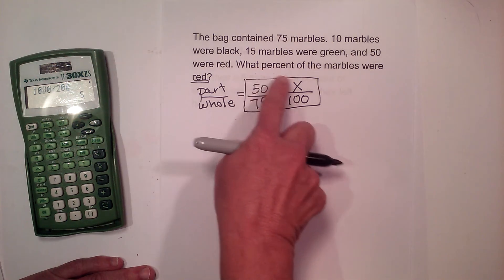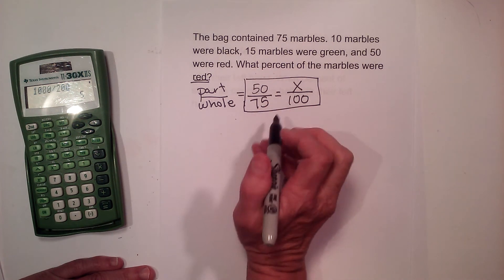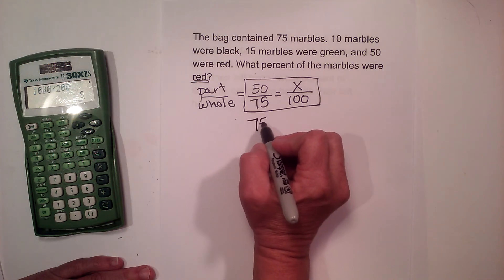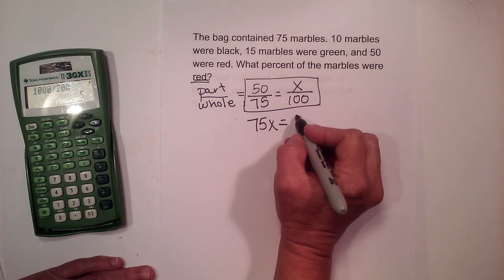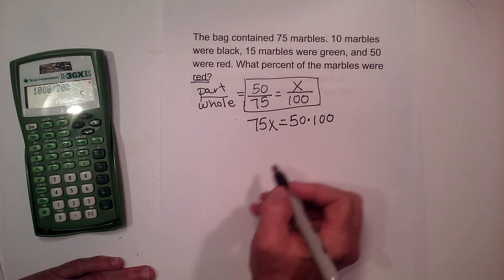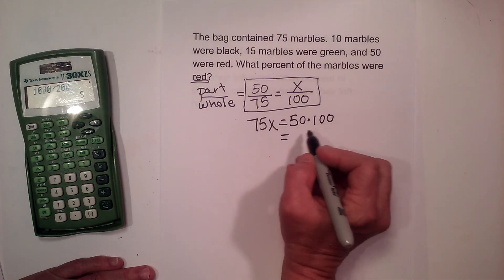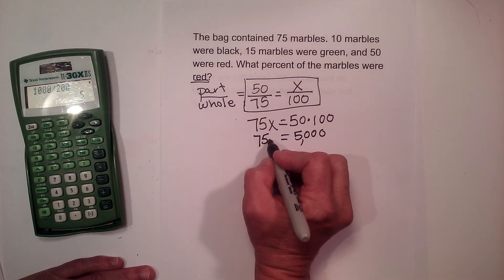And again we've got our proportion so we can just cross multiply. 75 times x is just 75x. 50 times 100, that's my other cross product. Well 50 times 100 is 5,000, is equal to 75 times x.